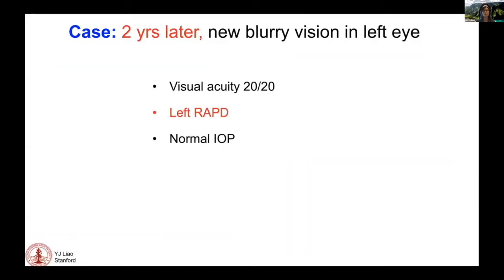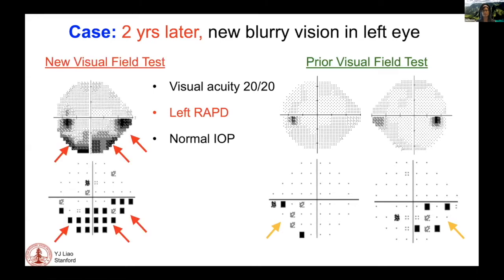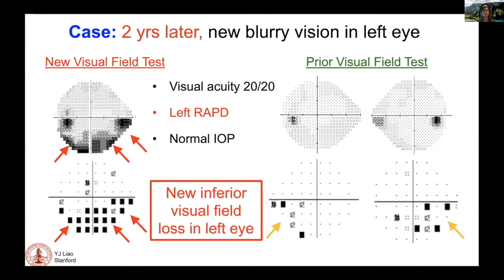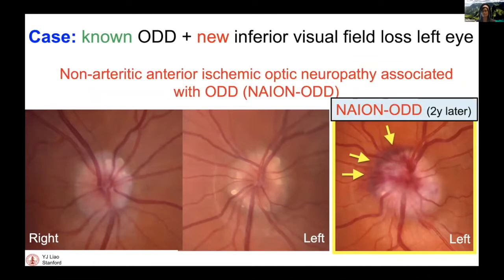Two years later, she develops new blurry vision in the left eye. Even though her vision is still 20/20, she now has a left relative afferent pupillary defect. She has a new inferior visual field defect. What you see on the right side of the screen is the new manifestation of optic disc edema and hemorrhage compared with the prior photos on your left. This is nonarterietic anterior ischemic optic neuropathy associated with optic disc drusen. The white arrows point to visible drusen peeking through the optic disc edema, the yellow points to the area of hemorrhage, and the entire optic disc is swollen.